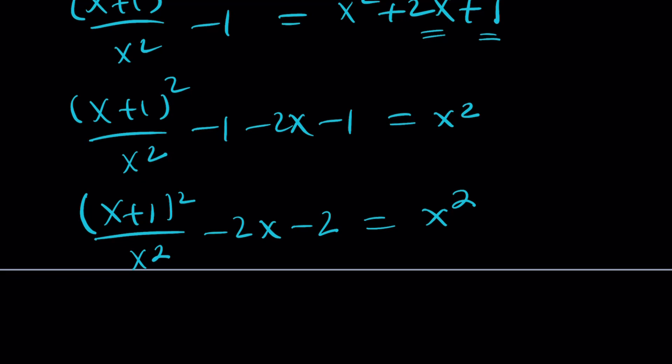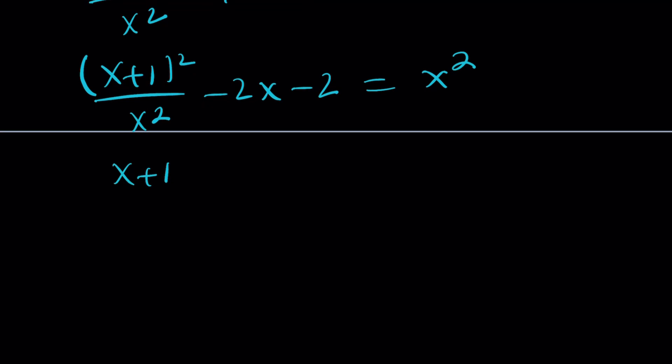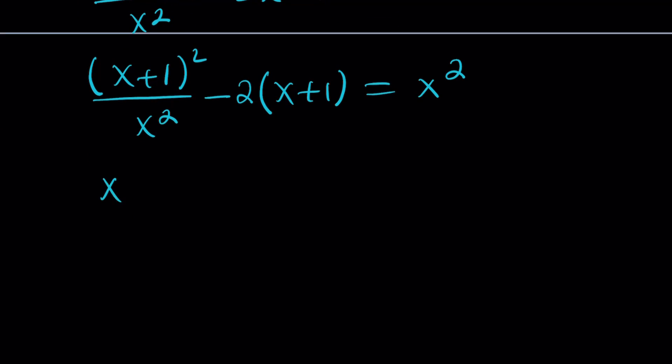And this gives us x plus 1 squared over x squared minus 2x minus 2 equals x squared. Now you'll see in a little bit, after factoring out something, this is going to look much better. So we're going to factor out partially a negative 2 here. And that's going to give us x plus 1, which is good because now x plus 1 is a common factor. We're kind of dealing with a rational equation. It's okay to keep things that way. I'm going to take out x plus 1. And inside, I'm going to have x plus 1 divided by x squared minus 2. And then that equals x squared.